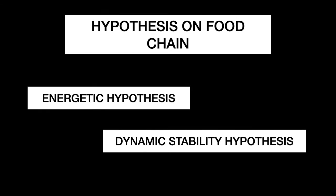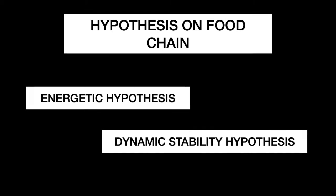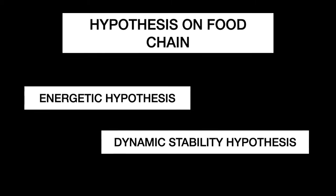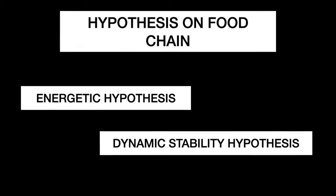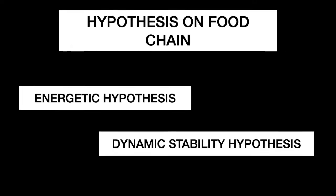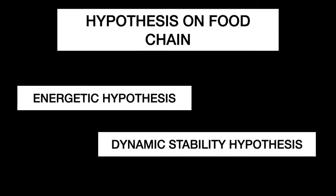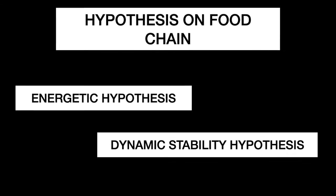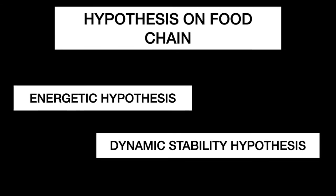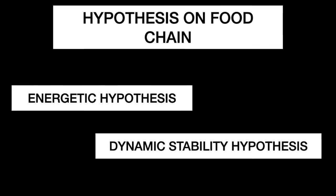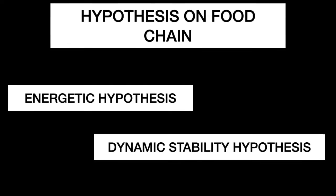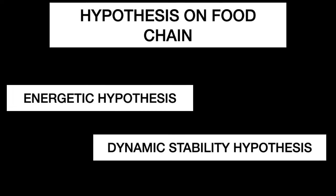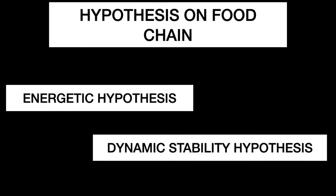insufficiency of energy transfer along the chain. This means that the length of a food chain cannot be unlimited because energy is taken up at each level of the chain. The dynamic stability hypothesis proposes that long food chains are less stable than short chains. That's all about the hypothesis part.